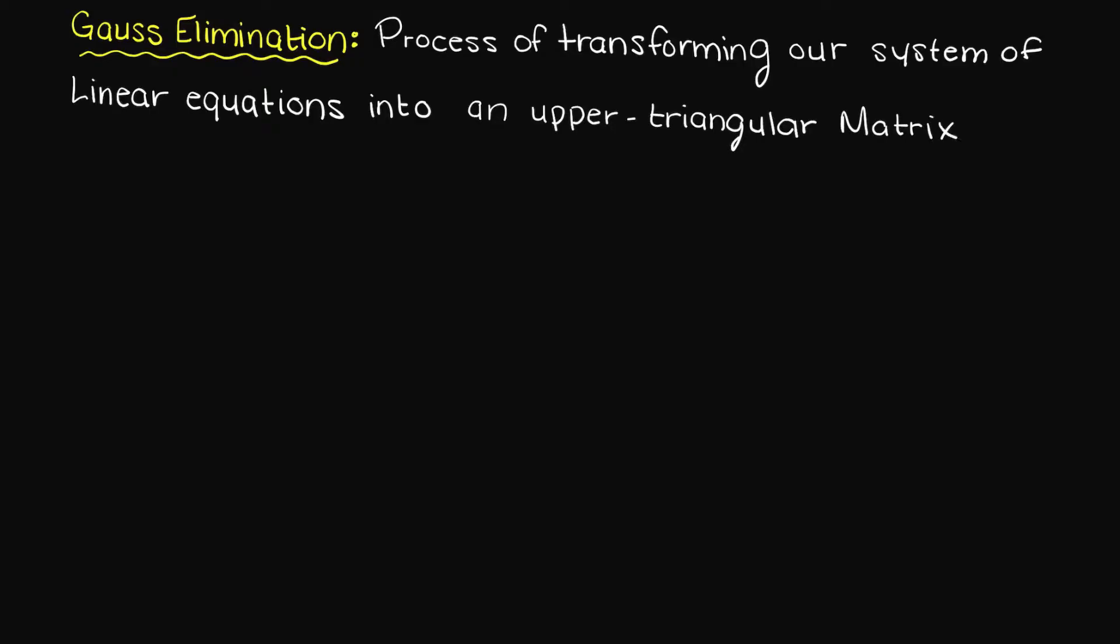First off, let's start with what Gauss elimination is. Gauss elimination is the process of transforming our system of linear equations into a matrix and transforming that matrix into an upper triangular matrix.